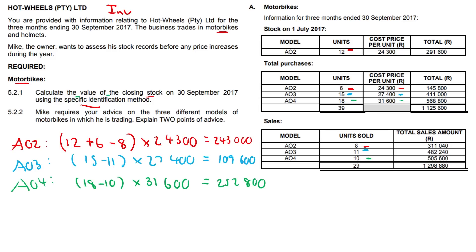With weighted average, that applies when selling interchangeable items, like different kinds of soccer balls - say a Chelsea soccer ball or a United soccer ball. If you support United, please click away from this video!